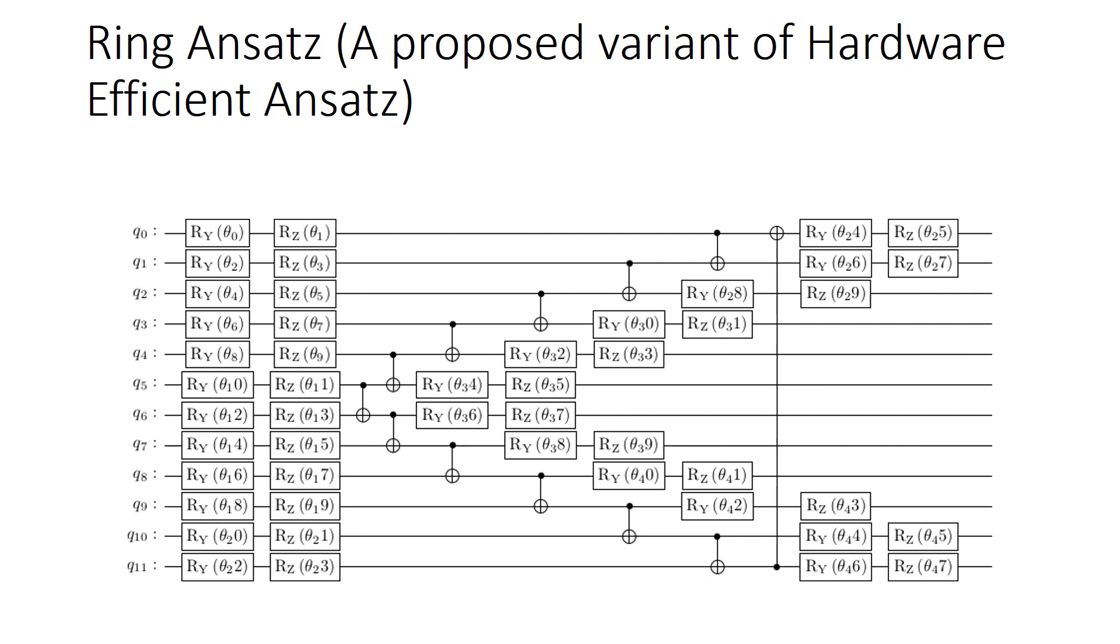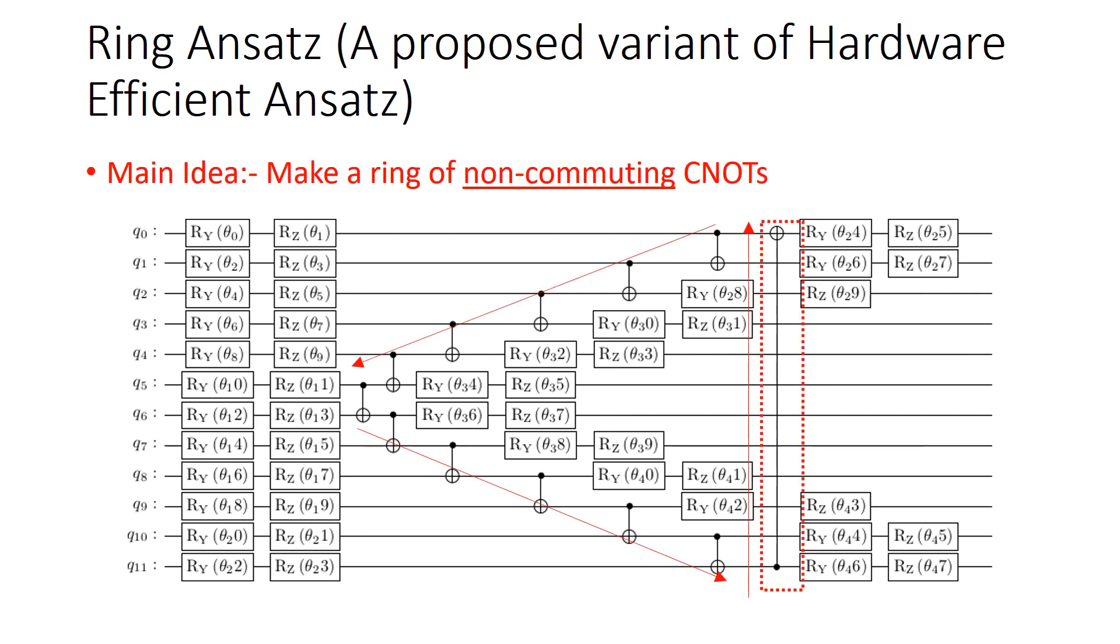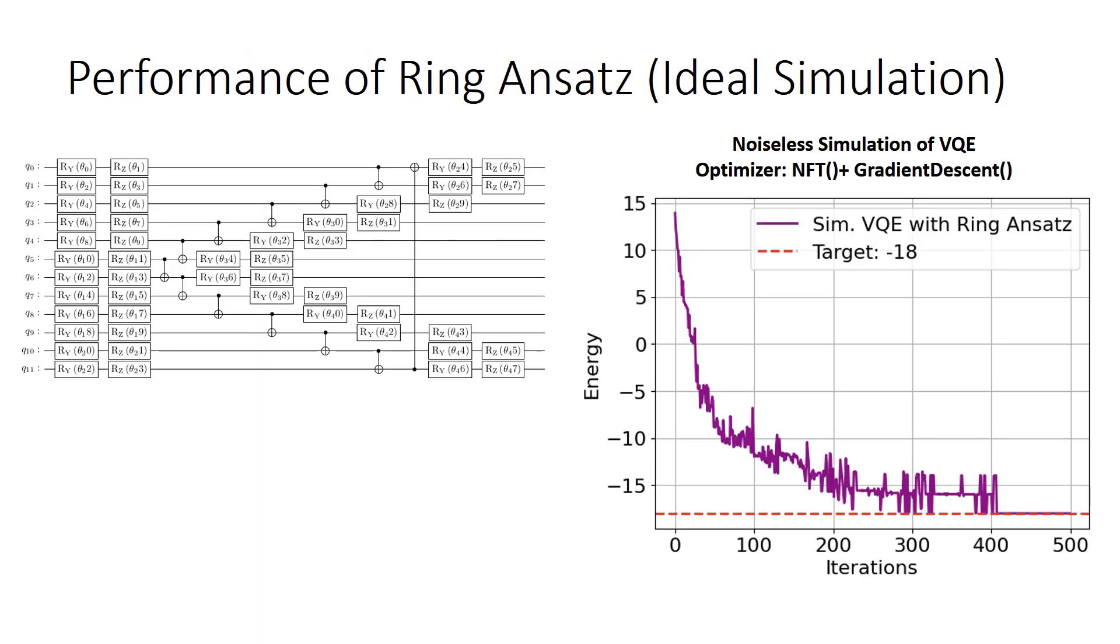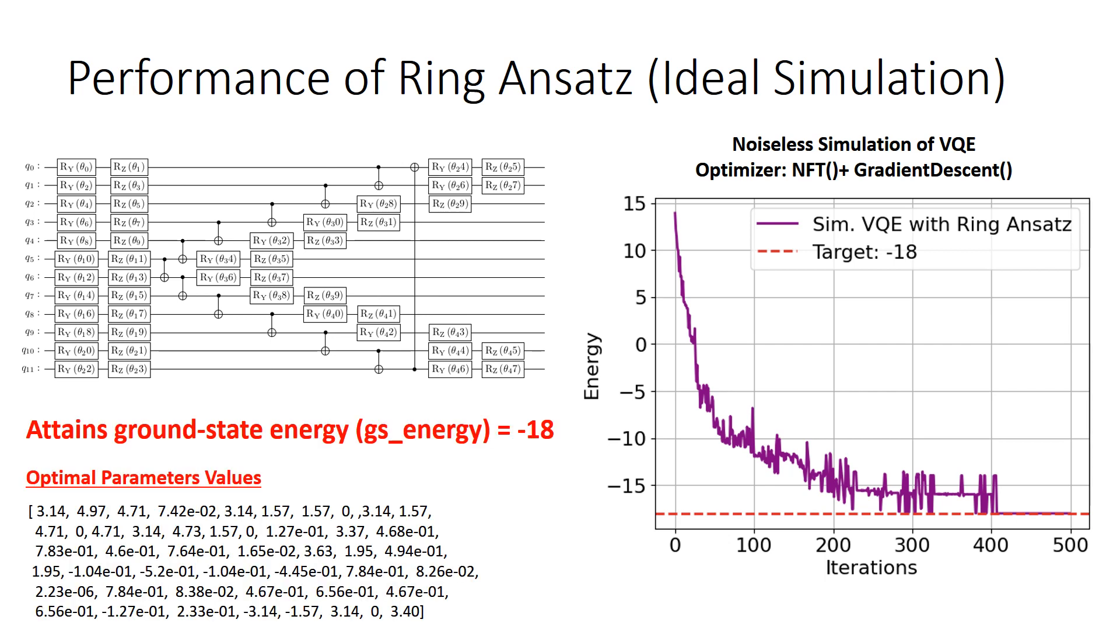The ring ansatz circuit is shown here. The basic idea is to make a ring of non-commuting CNOTs like this. In terms of its performance, as already indicated, here is the convergence graph starting with the random parameter values. When the convergence occurs, the optimal parameter values are given over here as well.